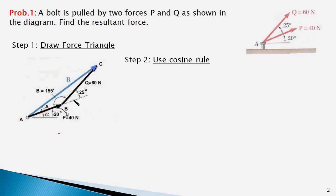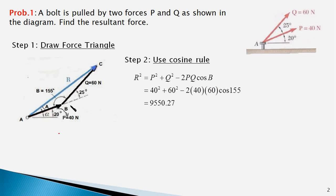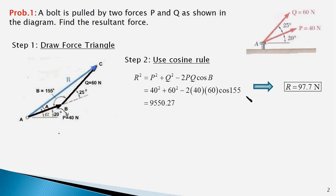We can straight away use the cosine rule to determine the magnitude of the resultant R. Here is the equation of the cosine rule — we plug in the values of 40 and 60 for P and Q, and 155 degrees for angle B. This yields the magnitude of the resultant as 97.7 Newtons.